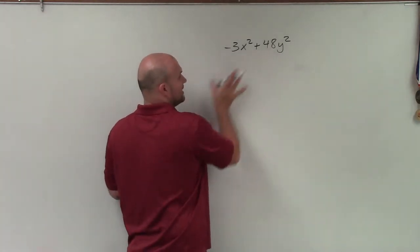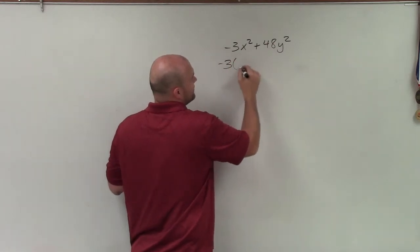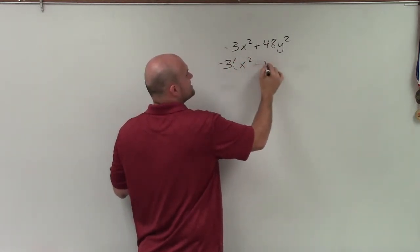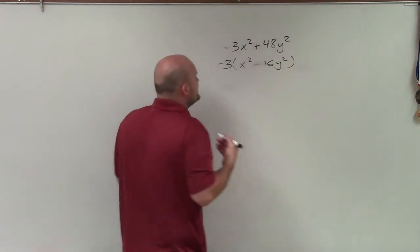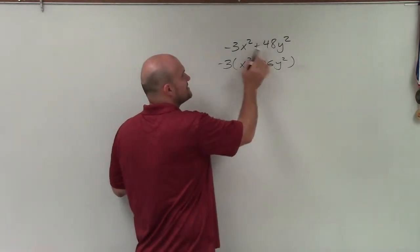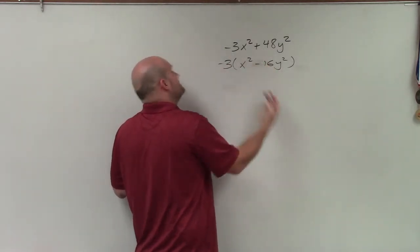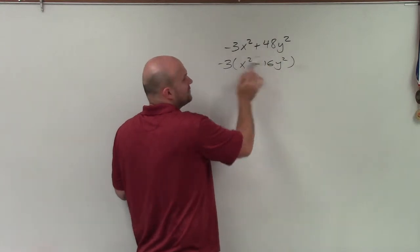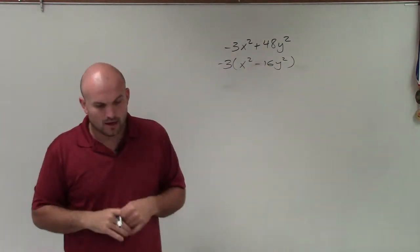So now what I'll do is I'll go ahead and factor out a negative 3. So I factor out a negative 3, I'm left with x squared minus 16y squared. The reason why that's a negative 16y squared is because, remember, that's positive. When you're factoring out, think of it as like dividing out that number from 48. So 48 divided by negative 3 gives you negative 16.